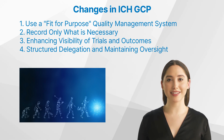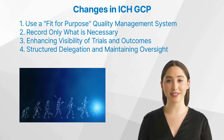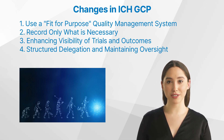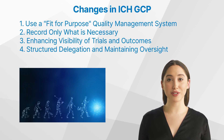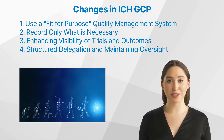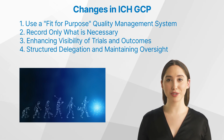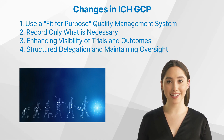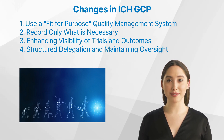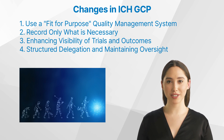3. Enhancing visibility of trials and outcomes. Revision 3 of ICH E6 introduces a call for the registration of trials on publicly accessible and recognized databases. This aligns with the European Union's push for greater transparency in clinical research through the EU Clinical Trials Regulation. By making trial information more visible, stakeholders can gain insights into ongoing trials, facilitate collaborations, and avoid duplication of efforts. Increased visibility will foster trust and promote the sharing of valuable knowledge across the clinical research community.